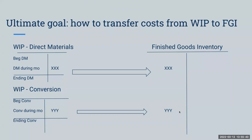What is our goal in process costing? We have these costs sitting in work in process: direct materials and work in process conversion. When you hear me say conversion, I mean direct labor and factory overhead — those costs that are converting the materials into finished goods. So our goal is to figure out how to get the beginning direct materials, the direct materials added in the month, our beginning conversion and conversion during the month, and then transfer those costs over to finished goods inventory as we produce our products.